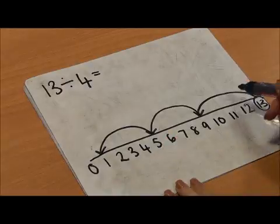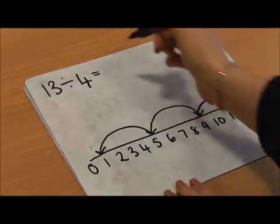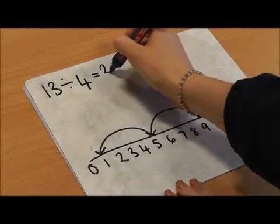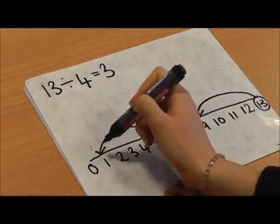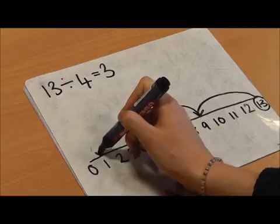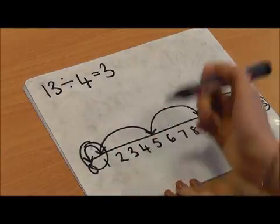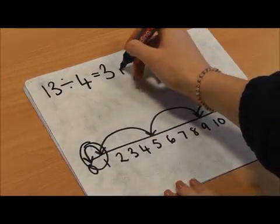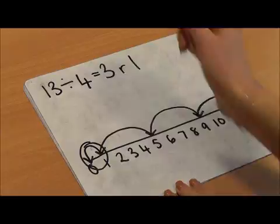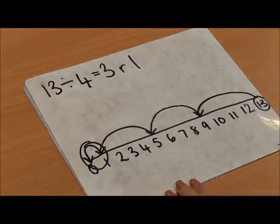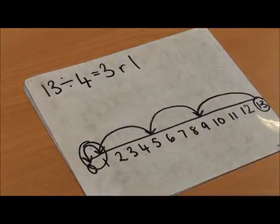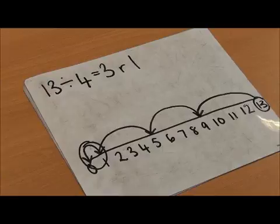So I've got 3 whole jumps and my remainder is 1. 13 divided by 4 equals 3 remainder 1.